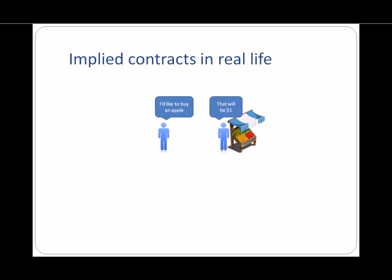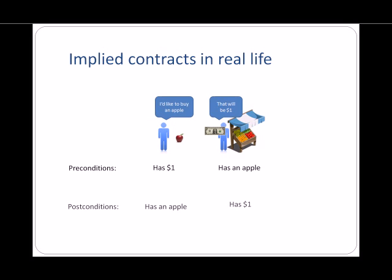For example, suppose I go to a fruit stand to buy an apple. We could say that the precondition to this transaction is that I have a dollar and that the fruit seller has an apple. If either of these things is not true, then the transaction cannot continue. We could say that the postcondition is that I now have an apple and the fruit seller has my dollar.